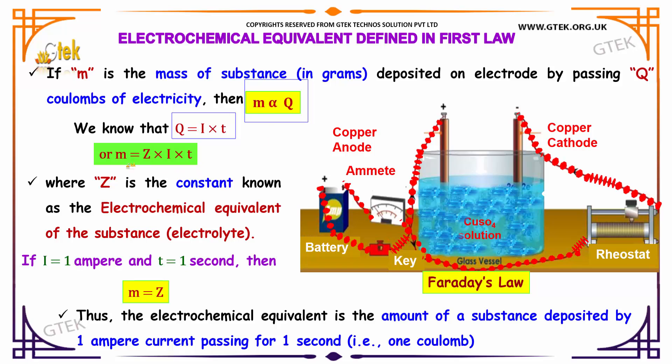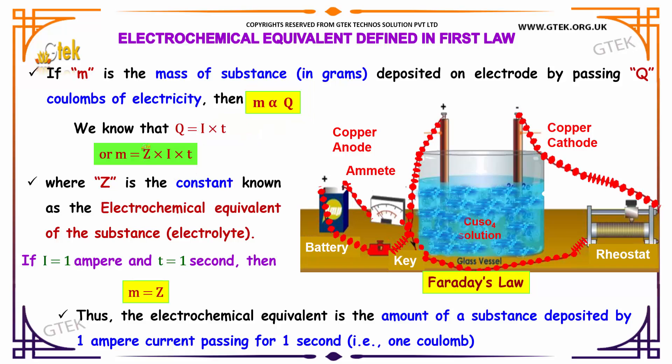Or else we can deploy this as m equal to Z times I times t, where this Z indicates the constant known as the electrochemical equivalent of the substance.